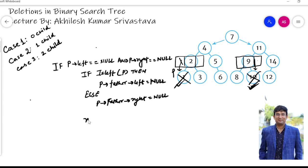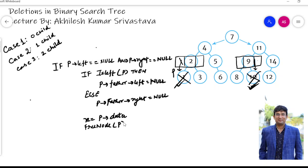The deletion process is a 3-step process. First, we save the given node's data information into a variable x. Then, this node's memory is destroyed using a free-node function. Finally, the x data element is returned. So case 1 deletion process is complete — the given node has no children.